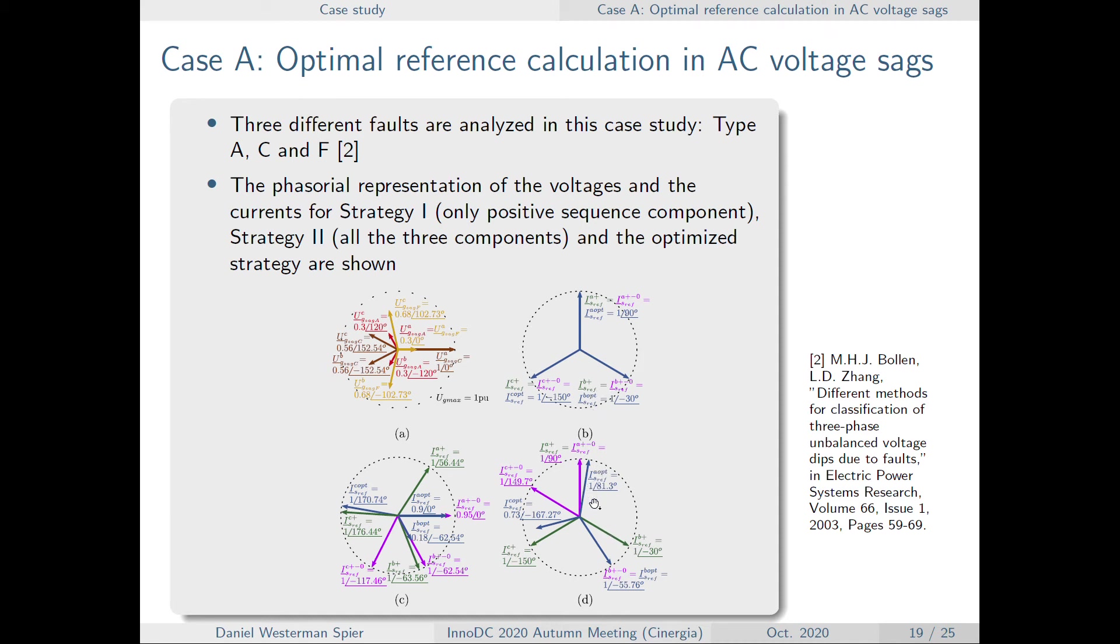What we want is that the blue line, which represents the optimization one, has the same behavior as the purple one, which is what the TSO is demanding us. However, the purple one has zero sequence, so it's not possible.